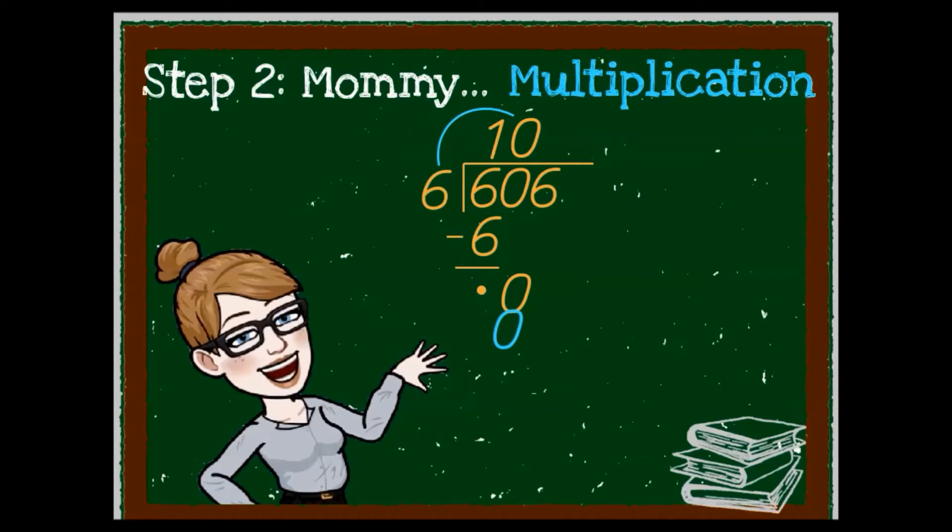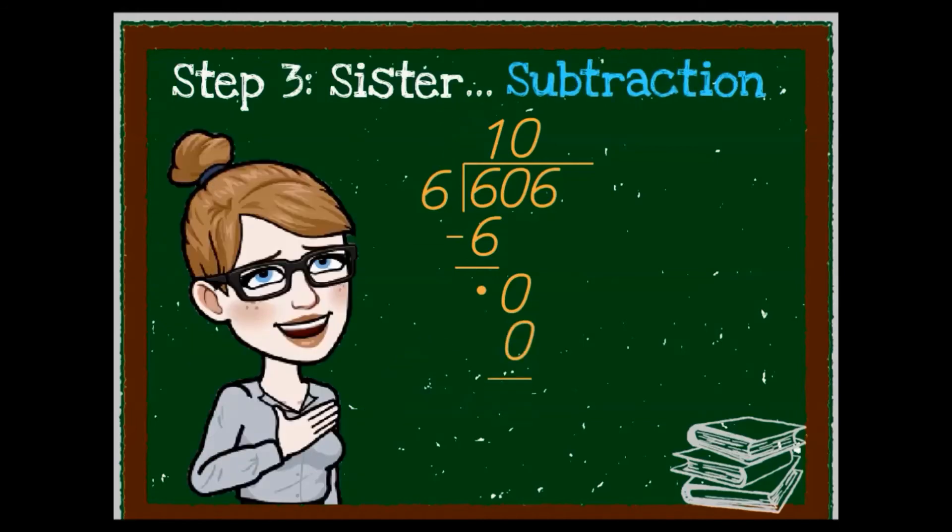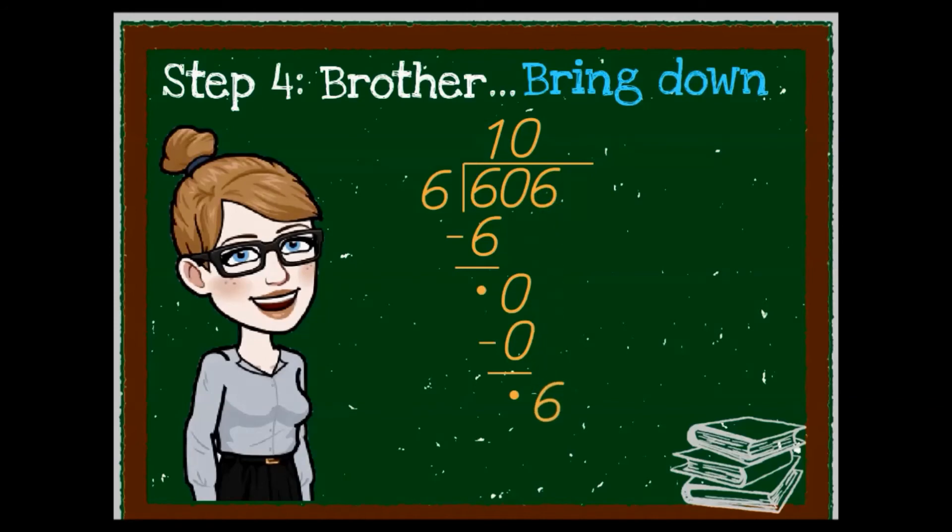Mommy multiplies with zero and moves it all the way down. Sister subtracts the zeros and brother brings down the six.